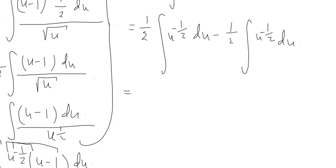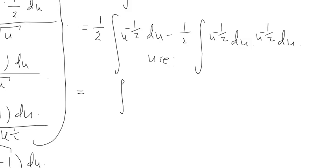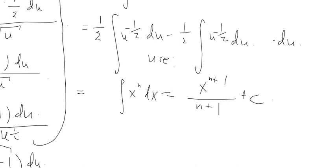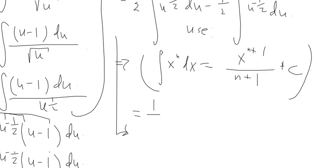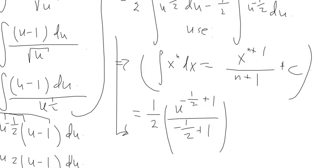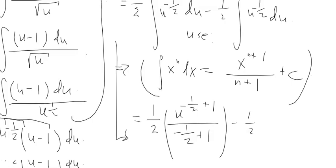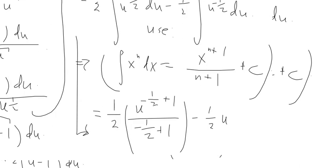These are very easy to integrate — we're through the tough part of setting it up. Each integral can be integrated using the power rule formula: the integral of x to the n dx equals x to the n plus 1, divided by n plus 1, plus C. Applying this, I get: 1 half times U to the negative 1 half plus 1, divided by negative 1 half plus 1, minus 1 half times U to the negative 1 half plus 1, divided by negative 1 half plus 1, plus C.